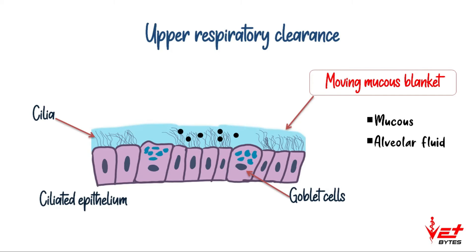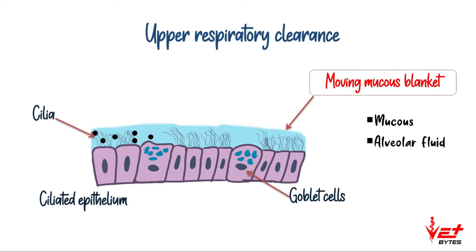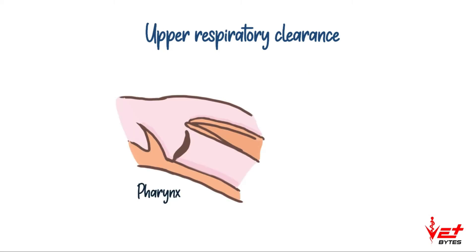The mucus is secreted by mucus-secreting cells like goblet cells, and the alveolar fluid is the fluid lining the alveoli. When any foreign particles come in contact with the upper respiratory tract, they are trapped in the moving mucus blanket. The mucus blanket is moved towards the pharynx with the help of cilia movement, traveling at a rate of 15 millimeters per minute.